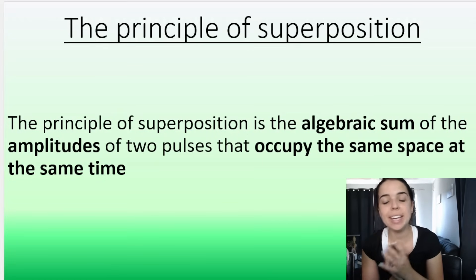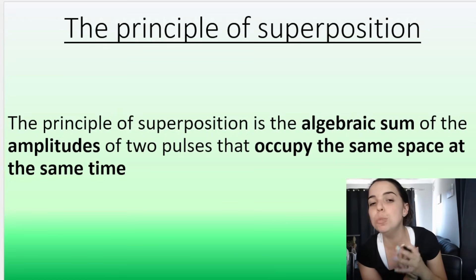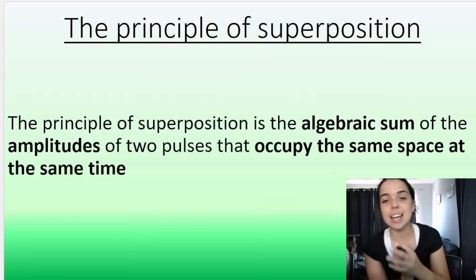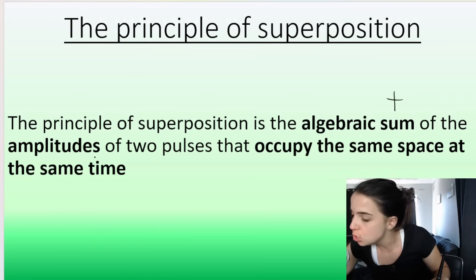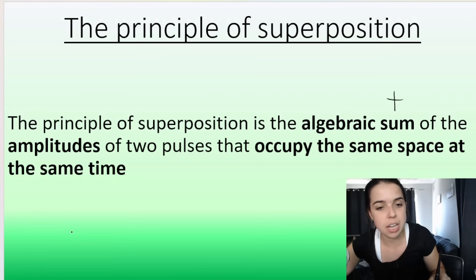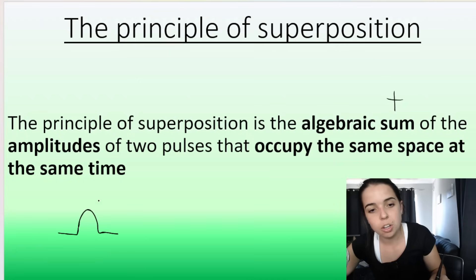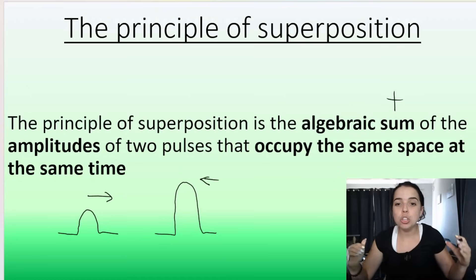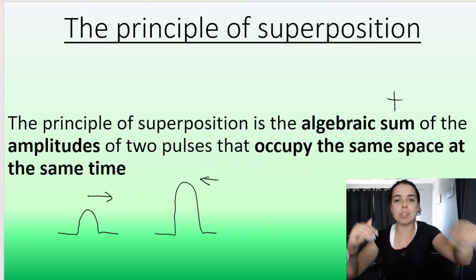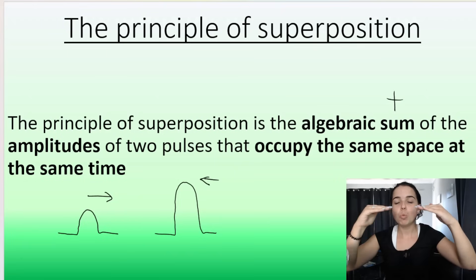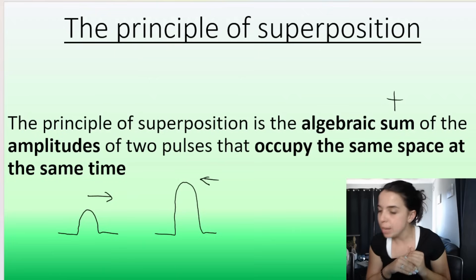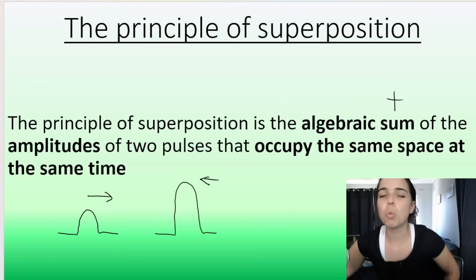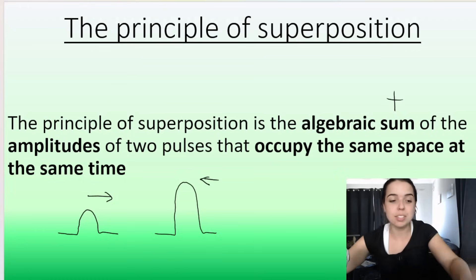When dealing with pulses, we can have something called the principle of superposition. Superposition is the algebraic sum of the amplitudes of the two pulses that occupy the same space at the same time. Basically, if I have a pulse going to the right and a pulse going to the left, what happens when they occupy the same space at the same time? Because they're traveling towards each other, at one point they are going to overlap one another.